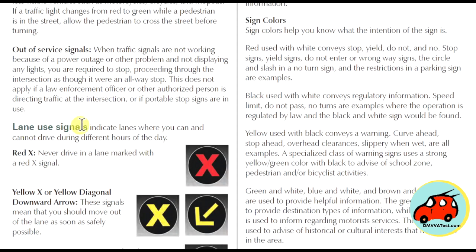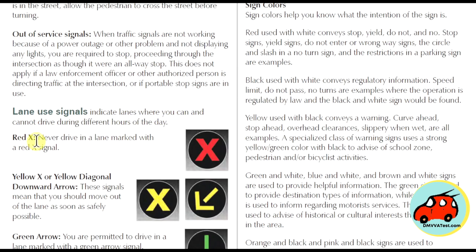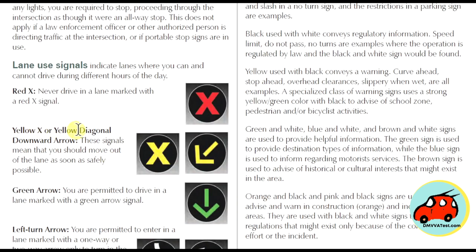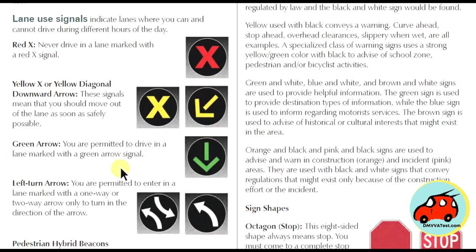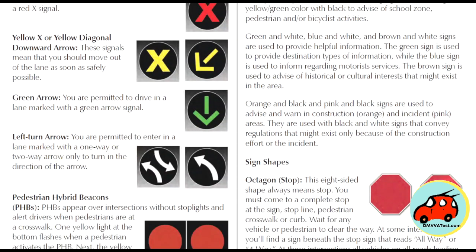Lane use signals are important when driving on highways and certain other roads. The red X means never drive in a lane with a red X signal. A yellow X or yellow diagonal downward signal means you should move out of the lane as safely as possible. A green arrow means you're permitted to drive in that lane. A left turn arrow means you're permitted to enter a lane marked with one-way or two-way arrows only to turn in the direction of the arrow.